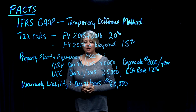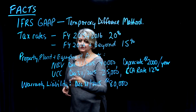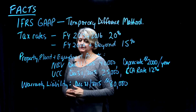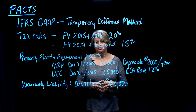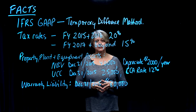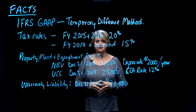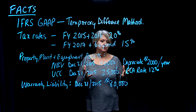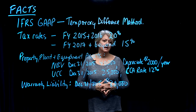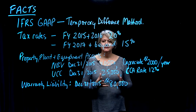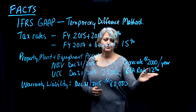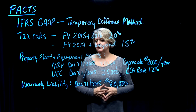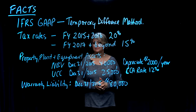The undepreciated capital cost allowance — short form UCC — for tax purposes as at December 31st, 2015 was $25,000. We'll assume a made-up tax class that has a CCA, or capital cost allowance, rate of 12% for this particular class of assets.